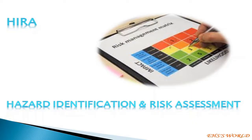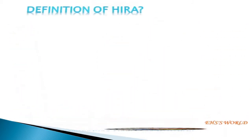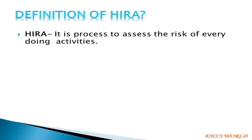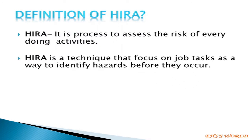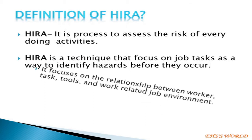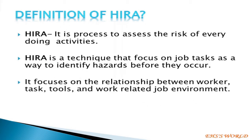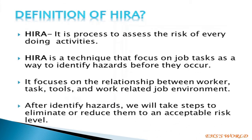HIRA stands for Hazard Identification and Risk Assessment. HIRA is a process to assess the risk of every activity. It is a technique that focuses on job tasks as a way to identify hazards before they occur. It focuses on the relationship between worker, task, tools, and the work-related job environment. After identifying hazards, we will take steps to eliminate or reduce them to an acceptable risk level.